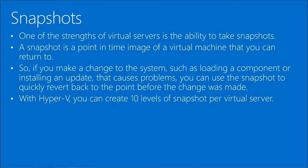Snapshots take the configuration, settings, and resource state of a machine at a certain time and create a duplicate copy. You can use snapshots to roll back if patches or new applications cause problems. With Hyper-V, you can create up to ten levels of snapshots, organized in folders with associated dates and times.